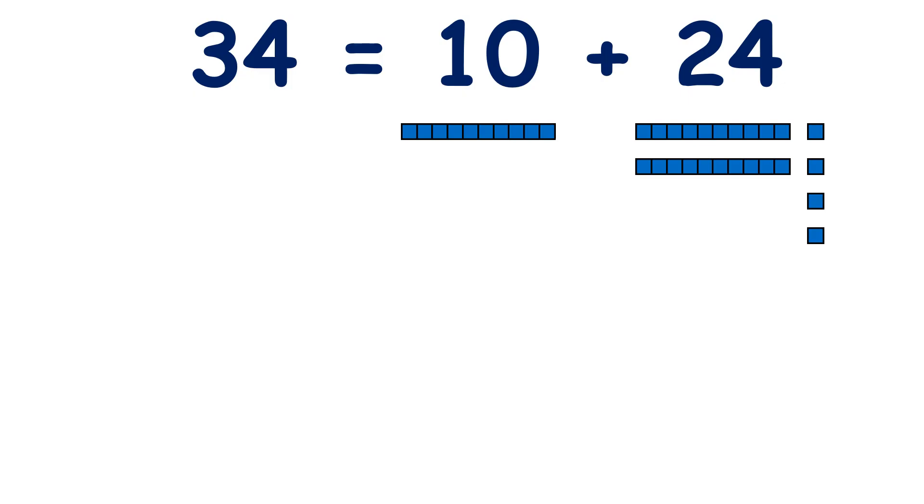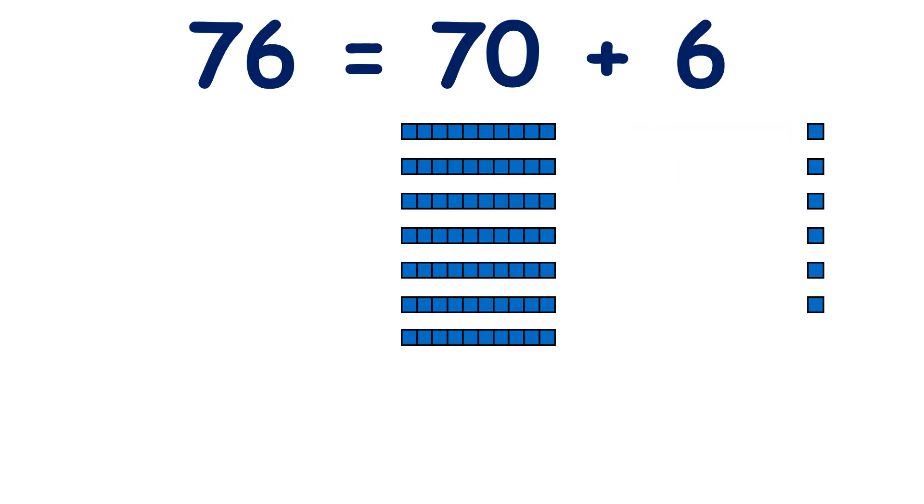Now let's look at another number. So 76. We're used to partitioning into tens and units, so we have 70 and 6. But how else could we partition the number 76?